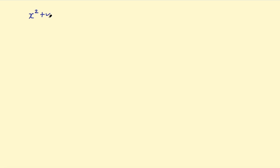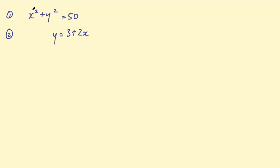I'll go through one more example where you are given an equation of a circle, where both terms are squared. You might have x squared plus y squared equals 50, and then y equals 3 plus 2x. You still use the same process: take this value for y and substitute it into the first equation, so it becomes x squared plus (3 plus 2x) all squared equals 50.